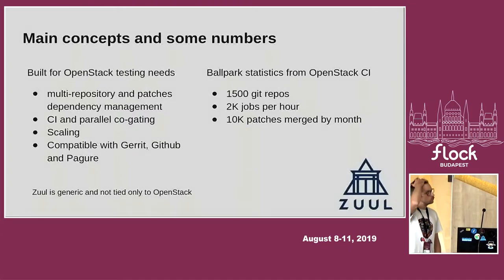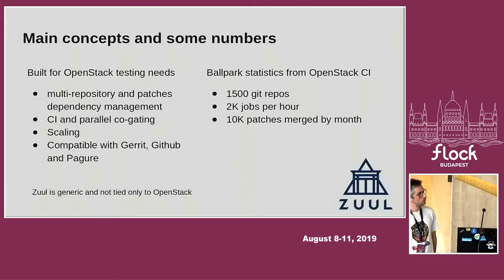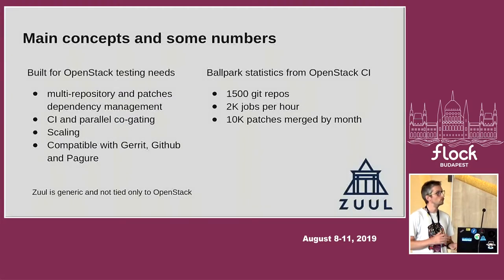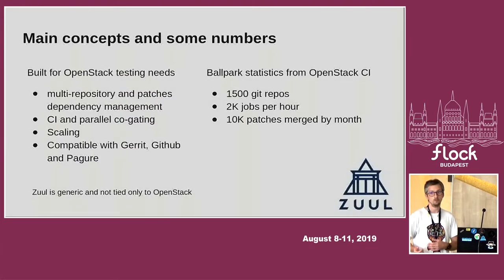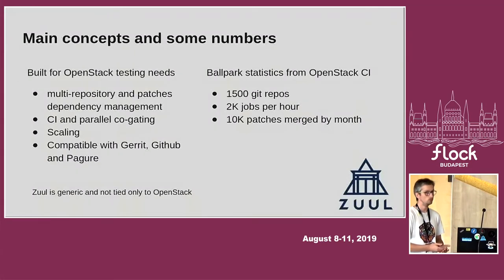On the right side of the slide, you have some statistics from the OpenStack CI where Zuul manages the CI. It manages around 1,500 Git repositories, about 10,000 jobs per hour, and around 10,000 patches merged every month. It's worth mentioning that Zuul is generic — it is not tied to OpenStack only, so it can be used in every project.